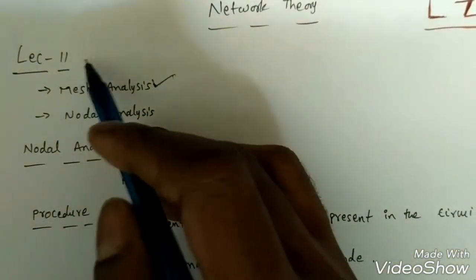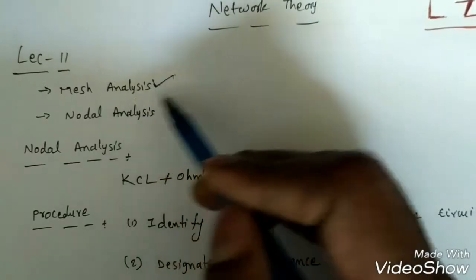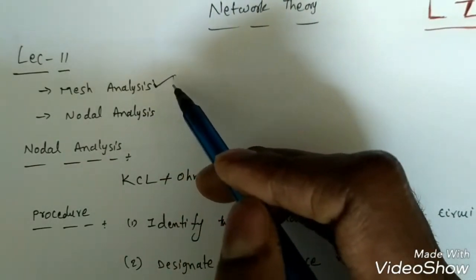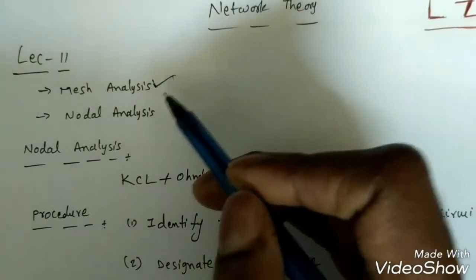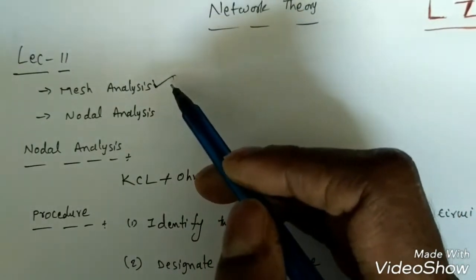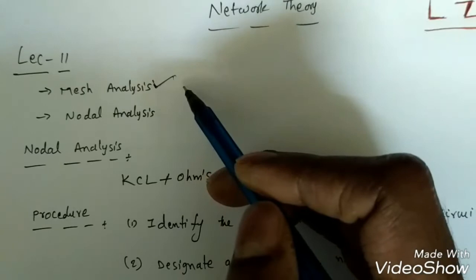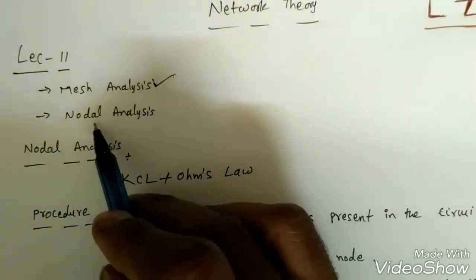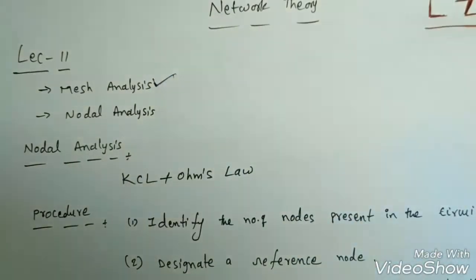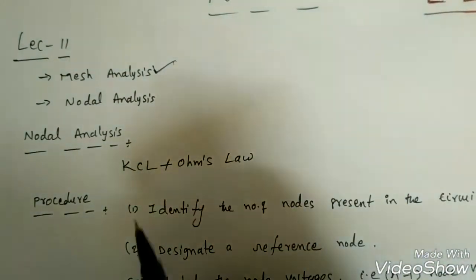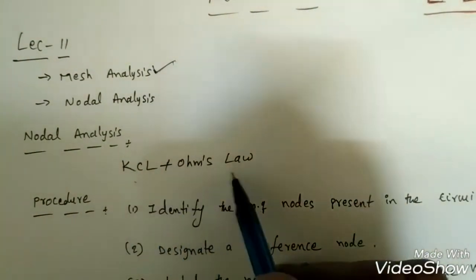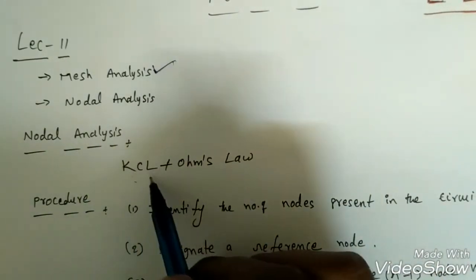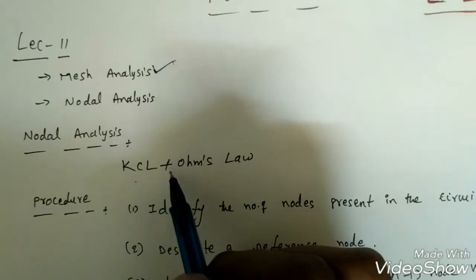This is lecture 11 part 2. In part 1 we have seen the mesh analysis — how to write mesh equations, how to find the mesh currents, and also the super mesh concept. Now in this lecture we are going to discuss nodal analysis. Nodal analysis is generally KCL plus Ohm's law. When we write nodal analysis, we always first write the KCL, then for each branch we write the Ohm's law.